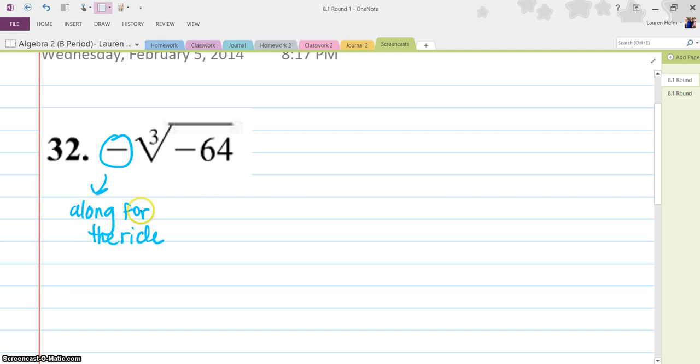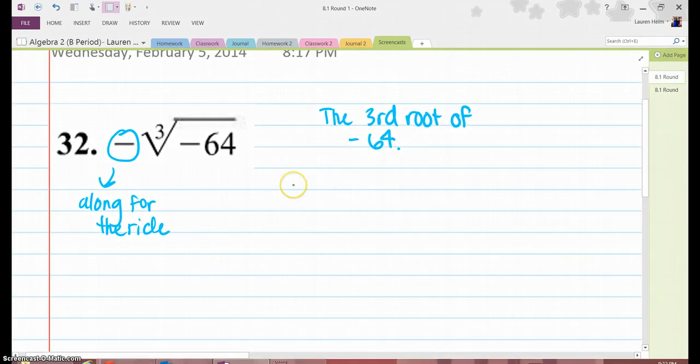So it's stating that the third root of negative 64. To break it down for you, you just take out the negative from the problem and make everything easier.